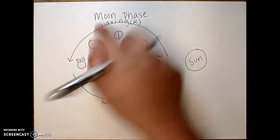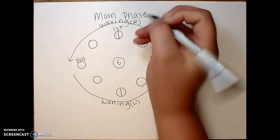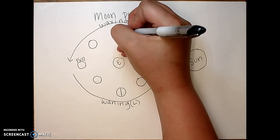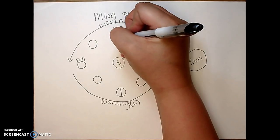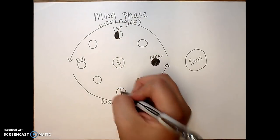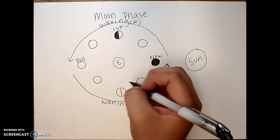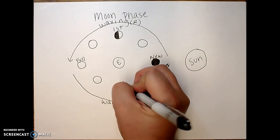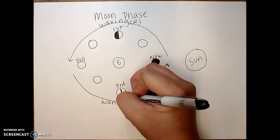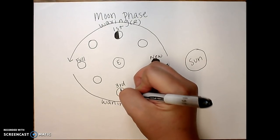So when I'm doing my first quarter, I'm waxing, I'm going to shade in the left side so that my light is on the right. Down here is going to be my third quarter. And I'm going to shade in the right side because my light on this side, because I'm waning, is going to be on the left side.